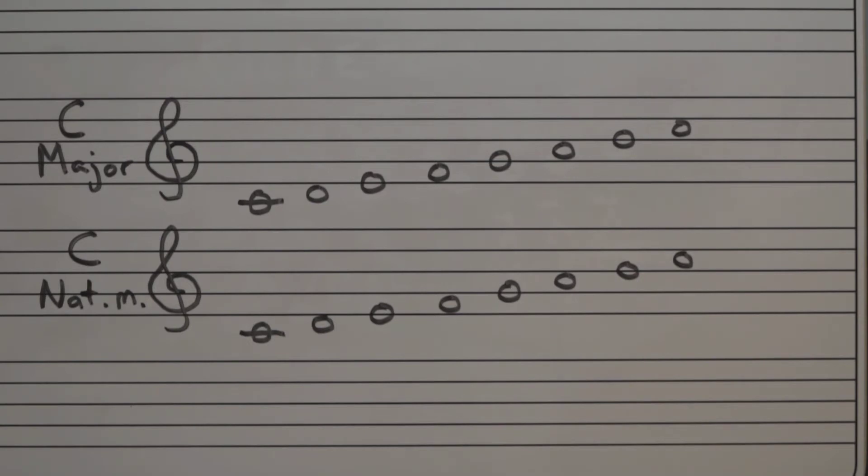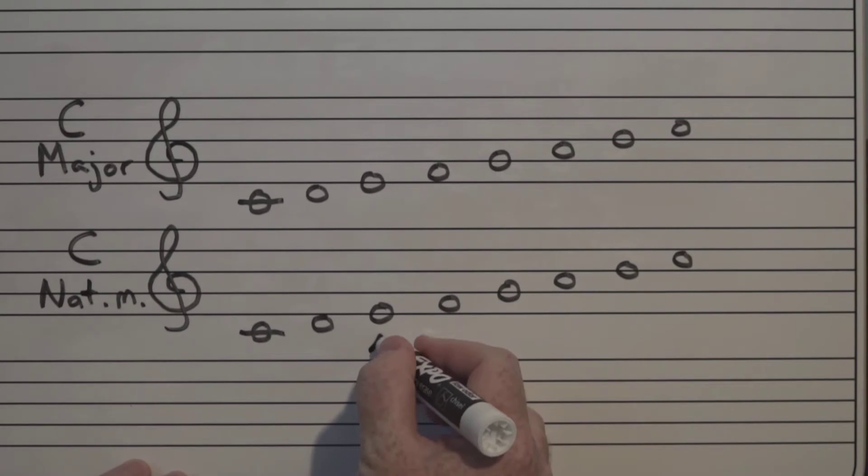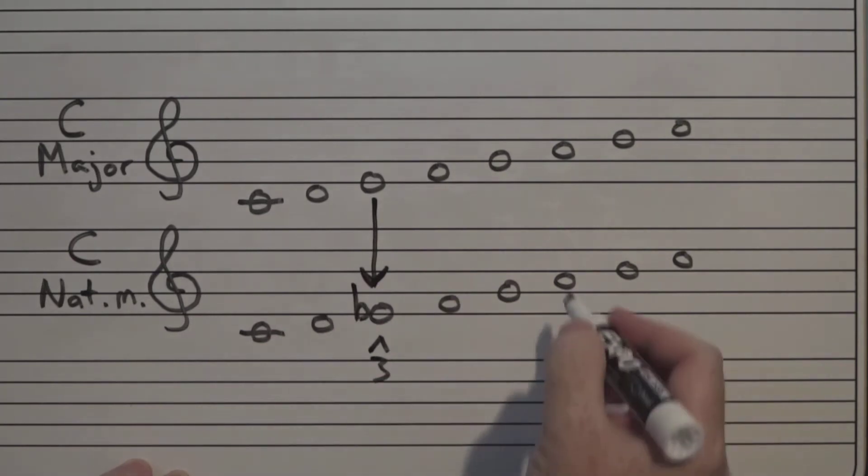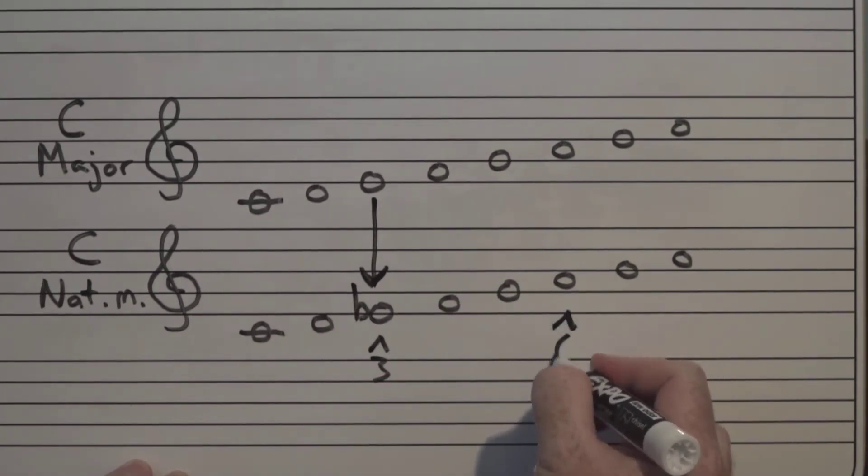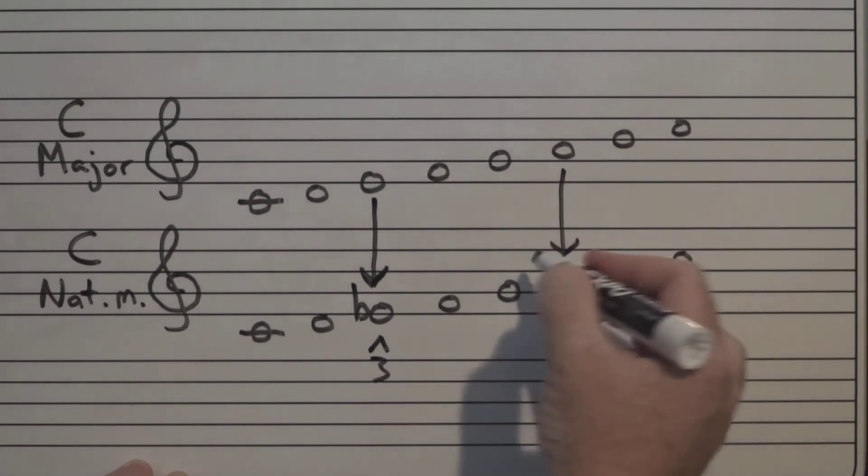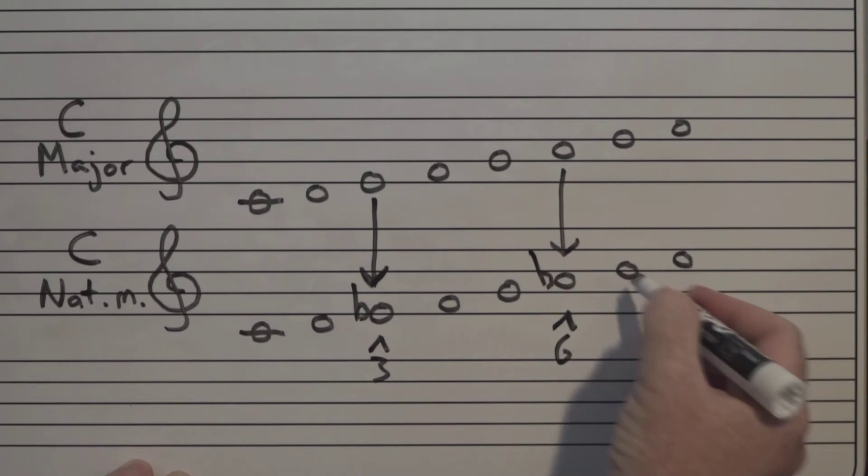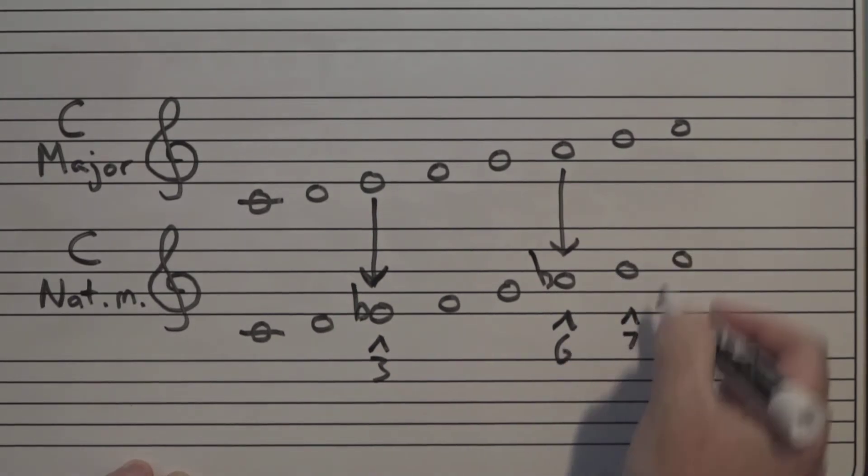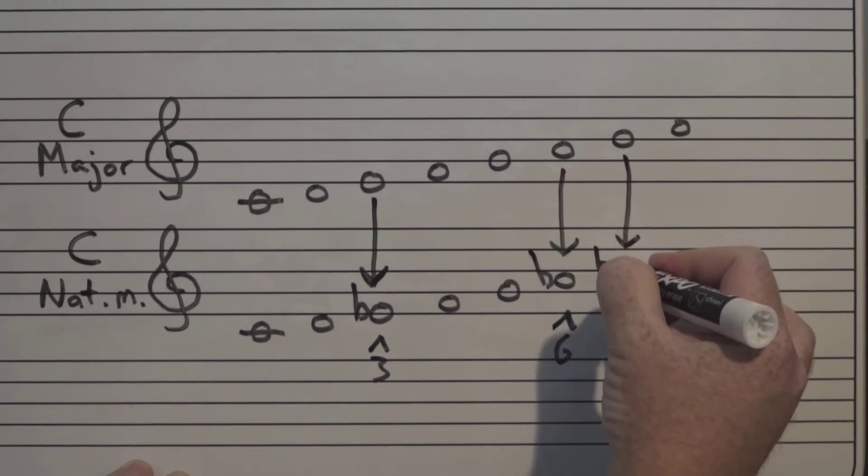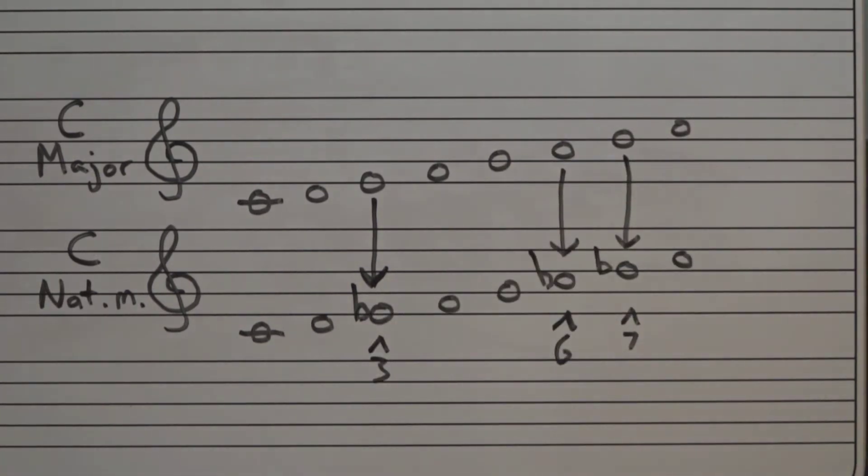The difference between a C major scale and a C natural minor scale is lowering scale degree three, lowering scale degree six, and lowering scale degree seven, and there we have a C natural minor scale.